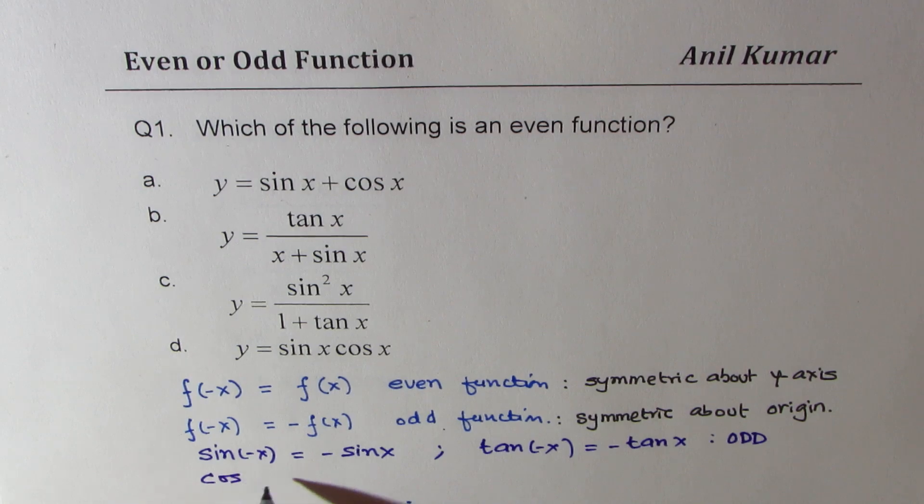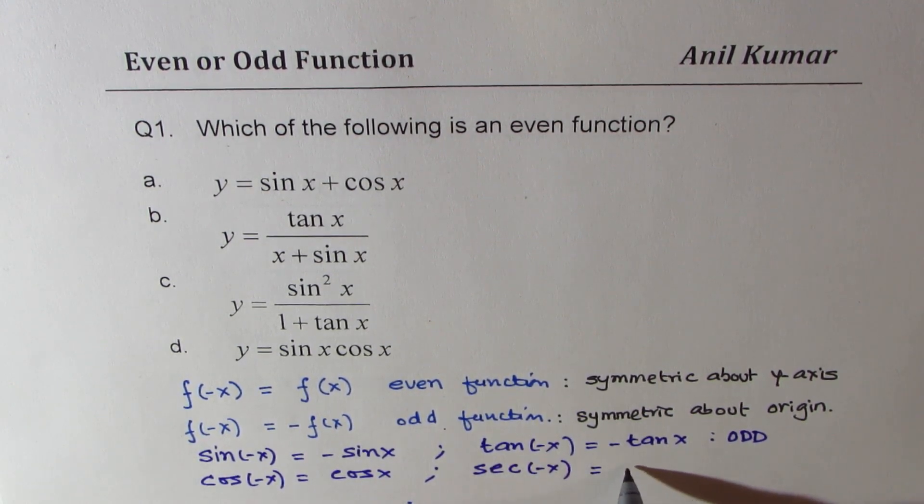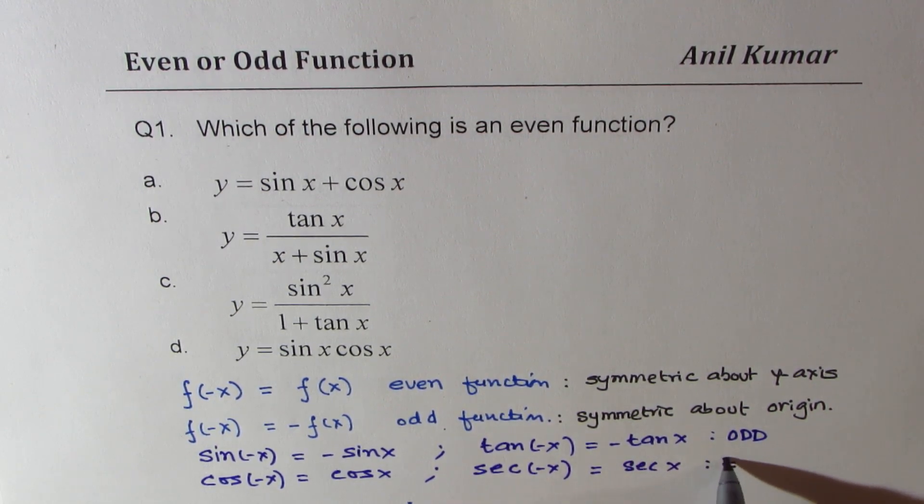On the other hand, cos of minus x is equal to cosine x. Similarly, secant also will be equal to secant x. So these are even functions. You get the idea? Now with that base, let us answer all these questions.